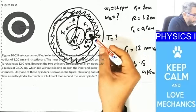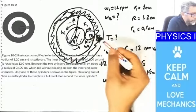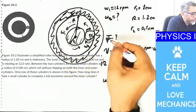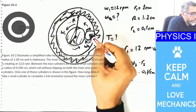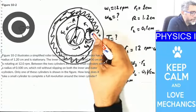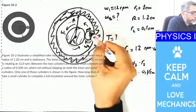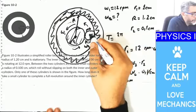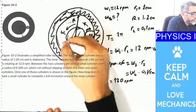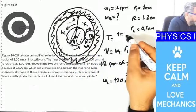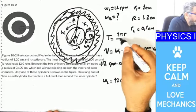I was talking about this translational motion. In order to find the period of this motion, I have to find the linear speed of the center of mass of this small rotating wheel. Once I find the center of mass speed, the period is nothing but 2π times the radius of this circular motion, which is going to be R, divided by the center of mass speed.